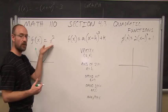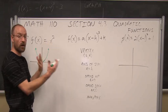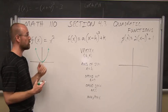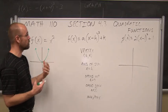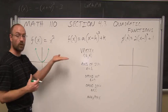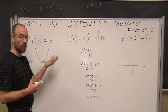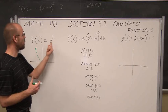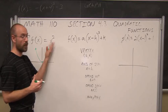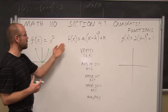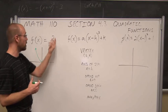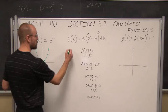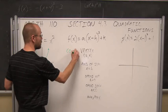The h value is our horizontal transform, our horizontal shift left or right. And k is our vertical shift up or down. The term vertex refers to where we're moving it vertically or horizontally. If we look at this function, we're not subtracting anything from x and not adding anything to the function, so we're not moving the function at all. Its vertex is the value (0, 0).